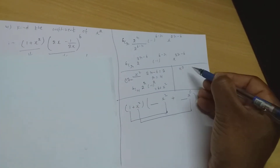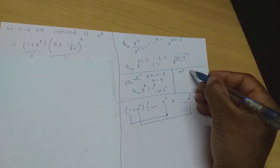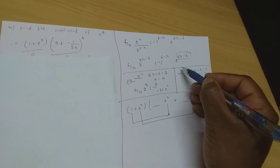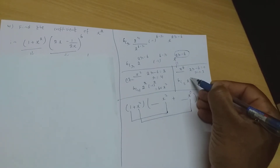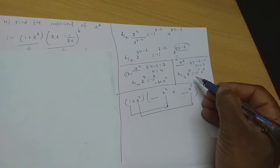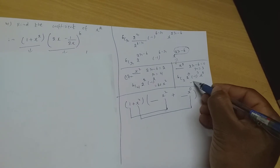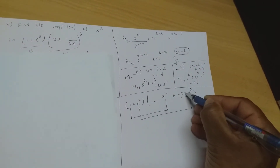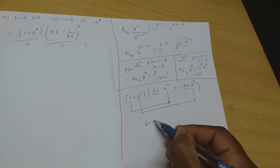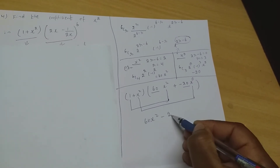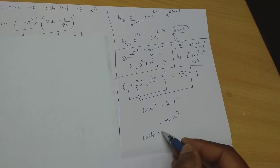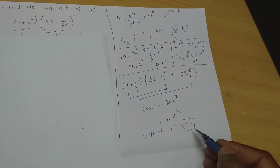For x⁰: set 2r − 6 = 0, giving r = 3. Substituting: 6C3 · 2^0 · (−1)^3 = 20 × 1 × (−1) = −20. So 1 × 60x² = 60x², and x² × (−20x⁰) = −20x². Adding: 60x² − 20x² = 40x². Therefore the coefficient of x² is 40.